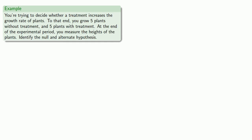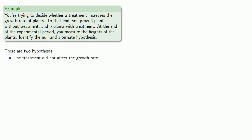You might wonder: why do we call this the null hypothesis? Why don't we just call it the hypothesis that gives us a quantifiable prediction? This example suggests why that terminology is used. Suppose you're trying to decide whether a treatment increases the growth rate of plants. You grow five plants without treatment and five plants with treatment. At the end of the experimental period, you measure the heights of the plants and identify the null and alternate hypotheses. There are two hypotheses: first, the treatment did not affect the growth rate; and second, the treatment did affect the growth rate.